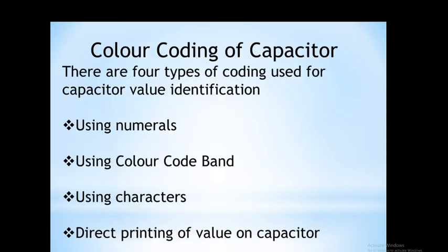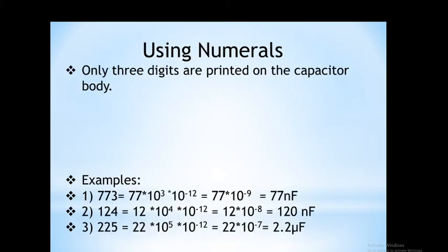Now we see the color coding of capacitors. The value of a capacitor can be found out by using numerals, by using color code, by using characters, or sometimes by direct printing of the value on the capacitor.